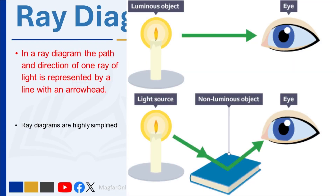This diagram shows the difference between the path of light traveling from a luminous and a non-luminous object. Light travels in a straight line directly from a luminous object to your eye. For us to see non-luminous objects, light first travels in a straight line from a luminous object to the book, then bounces from the book into our eyes. That is how we are able to see the book.